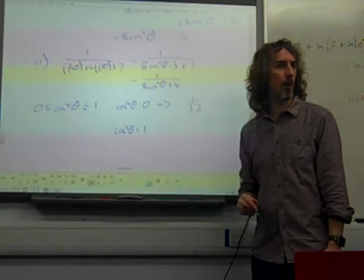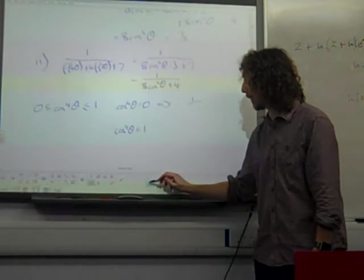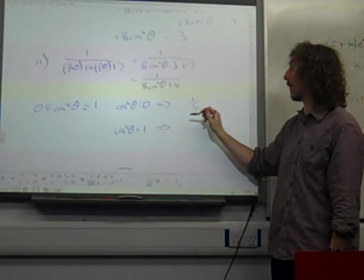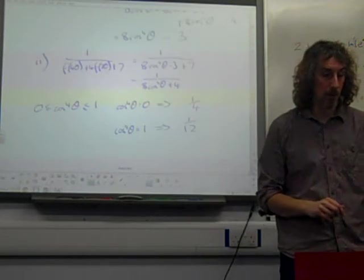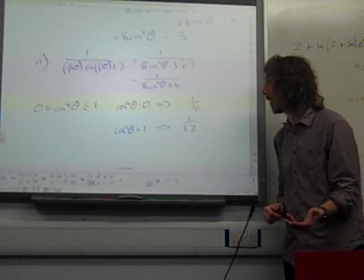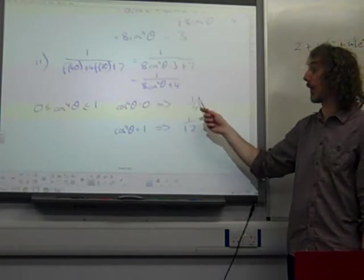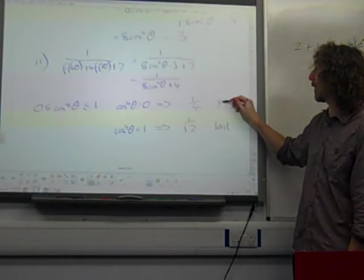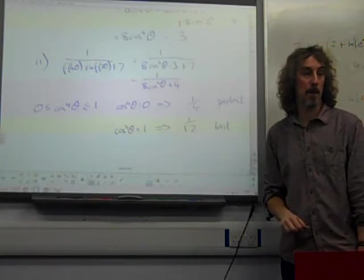So if cos to the 4 theta equals 0, we've got 0 plus 1 on the bottom, so we've got 1 over 4. If that equals 1, we've got 8 plus 4 on the bottom, so we have got 1 over 12. So there are two extreme values. Now, the mark scheme didn't care whether you specified greatest or least. They're the two extreme values, because of course the 4 between us would just give us values between those. So that's the least and that's the greatest, but you didn't need to specify that. You just needed to write down those two values.